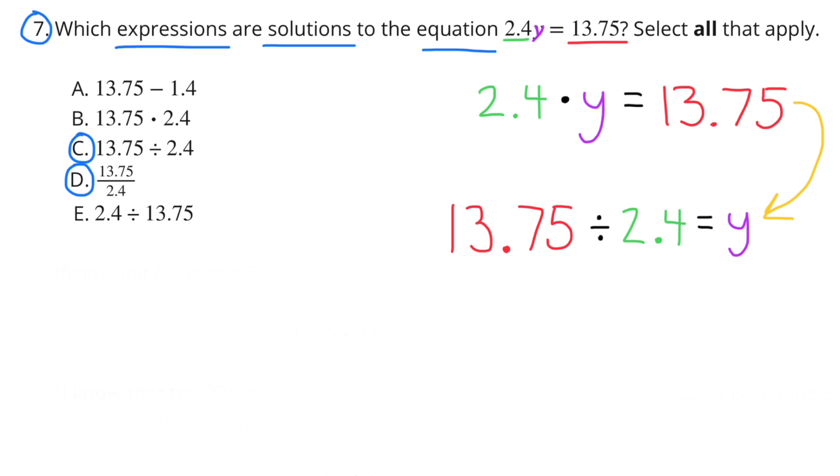That allows me to solve for Y. So let's look at our choices. C, 13 and 75 hundredths divided by 2 and 4 tenths. That would work. And then D, 13 and 75 hundredths over 2 and 4 tenths, since that also means 13 and 75 hundredths divided by 2 and 4 tenths.